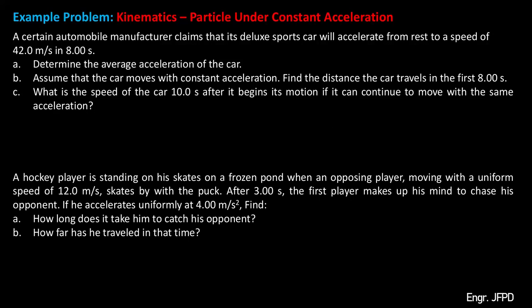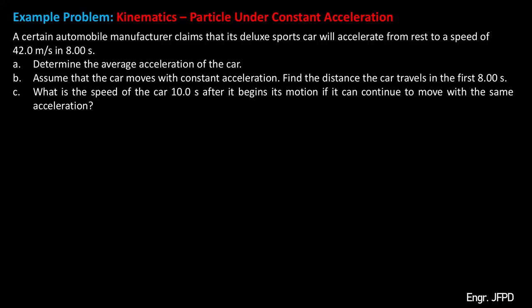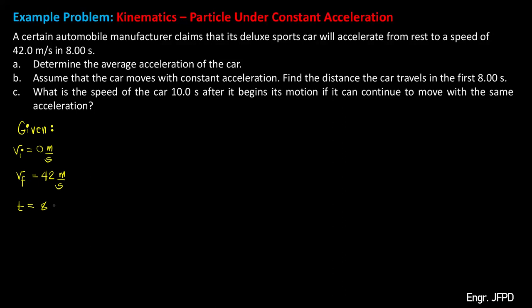Now let's try to answer these two problems. For our first problem, a certain automobile manufacturer claims that its Deluxe sports car will accelerate from rest to a speed of 42 meters per second in 8 seconds. From our given, the initial velocity of the car is equal to 0 meters per second since the car is initially at rest, and it will reach a final velocity of 42 meters per second in a time of 8 seconds.